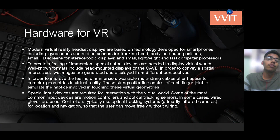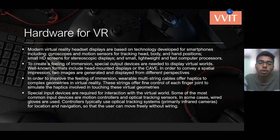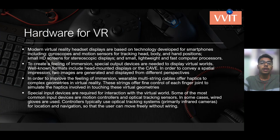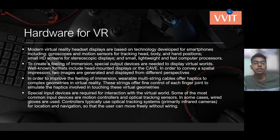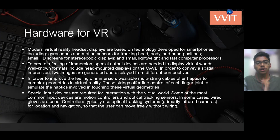Now we're going to see the hardware required for VR. VR displays are based on technology developed for smartphones, including gyroscopes and motion sensors for tracking head, body, and hand positions, small HD screens for stereoscopic displays, and small lightweight faster computer processors. Creative output devices are needed to display virtual worlds — well-known formats include head-mounted displays and the CAVE. To improve the feeling of immersion, wearable multi-string cable gloves offer haptics for complex geometries in virtual reality, with strings attached to each finger joint to simulate the haptics involved in touching virtual objects.